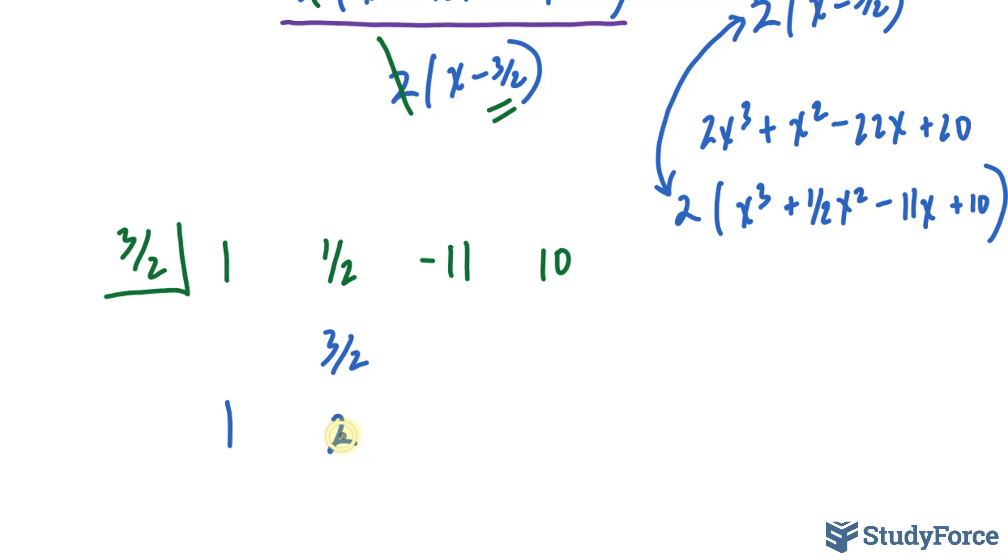Again, 3/2 times 2 makes 3, and we'll add these two numbers together. Adding those two gives us minus 8. 3/2 times minus 8 equals negative 12. Adding 10 and negative 12 together gives us negative 2.